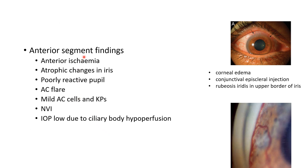Coming to the anterior segment findings: due to anterior ischemia, there can be atrophic changes in iris, poorly reactive pupil, anterior chamber flare, mild anterior chamber cells, and keratic precipitates. There can be neovascularization of iris. However, the intraocular pressure will be low due to ciliary body hypoperfusion.